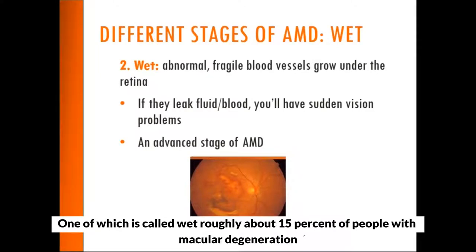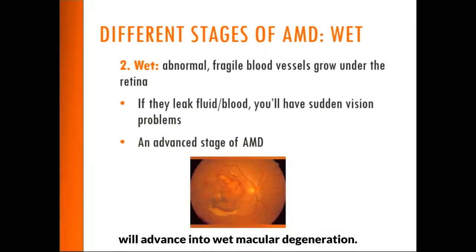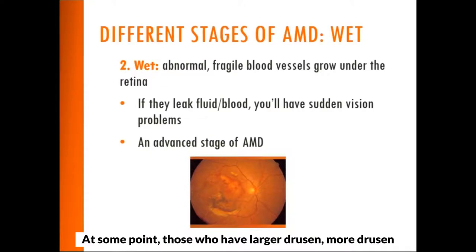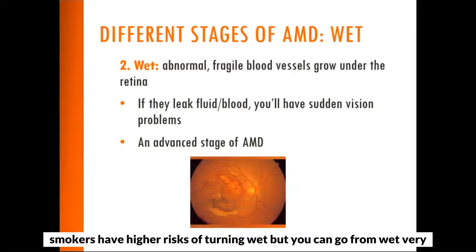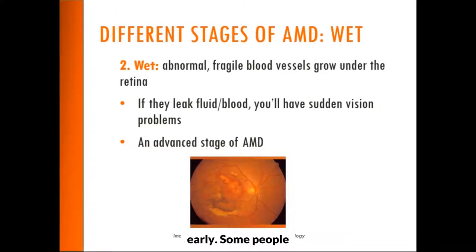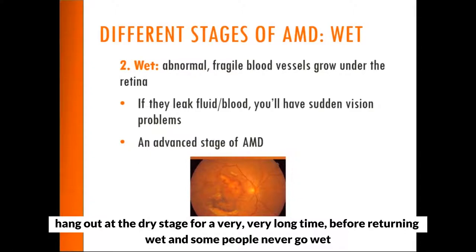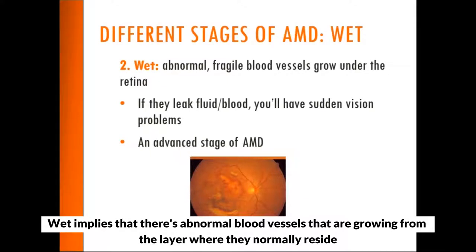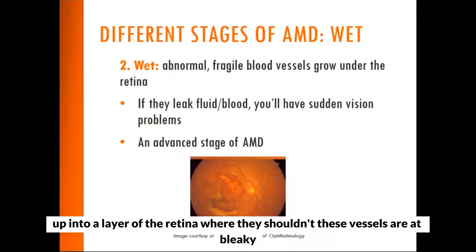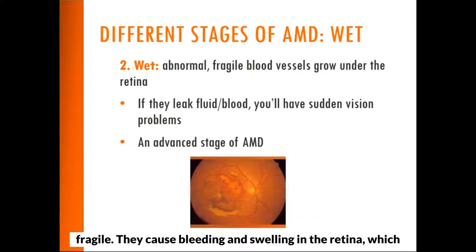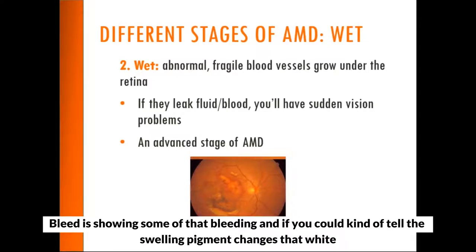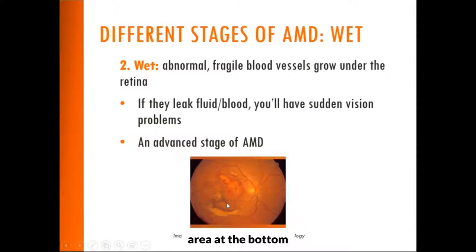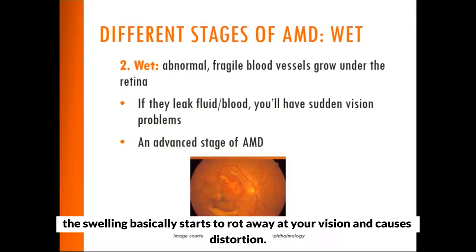Macular degeneration can advance into more advanced stages. One is called wet — roughly about 15 percent of people with macular degeneration will advance into wet macular degeneration at some point. Those who have larger drusen, more drusen, or who smoke have higher risks. Some people hang out at the dry stage for a very long time before turning wet, and some people never go wet. Wet implies that there are abnormal blood vessels growing up into a layer of the retina where they shouldn't be. These vessels are leaky and fragile — they cause bleeding and swelling in the retina, and the swelling basically starts to erode your vision and causes distortion.